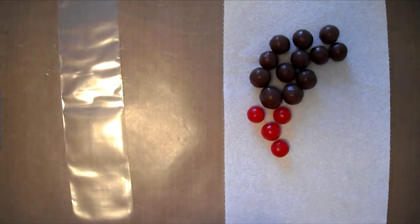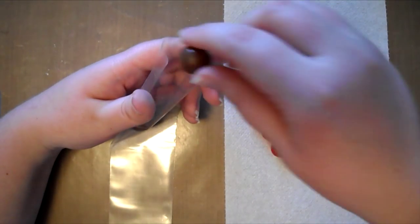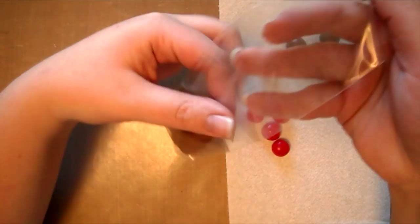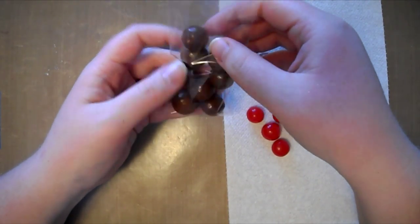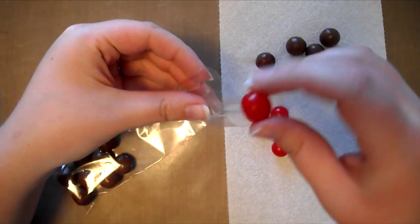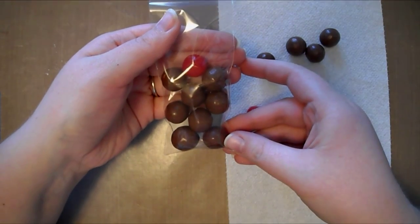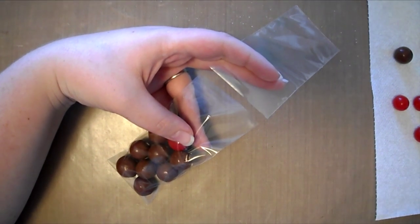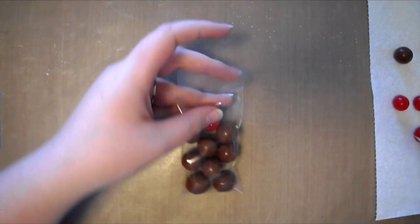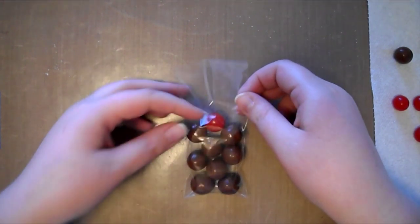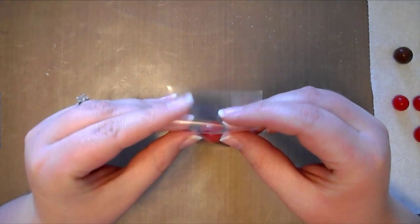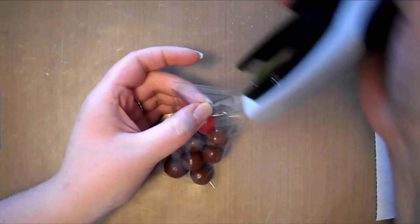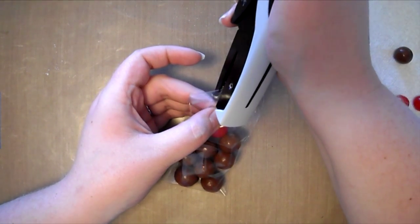For each treat bag, you will need eight Whoppers and one Sour Cherry. Once you have filled your treat bag, you can go ahead and trim off the excess, but make sure to allow for enough to fold over your bag and put a staple in it. Adding a staple at this point just helps to ensure that none of the items in the bag will come rolling out.